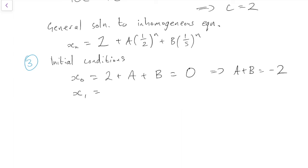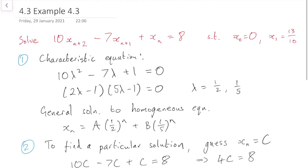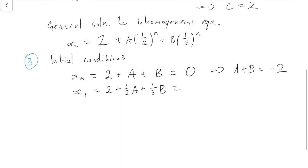And x1, which will equal to 2 + (1/2)A + (1/5)B, equals 13/10. That was given to us in the equation. OK, so if we multiply everything up by 10, take the 2, which is now a 20, over to the left-hand side, that will give us a -7 on the right-hand side.